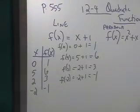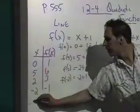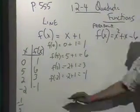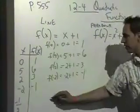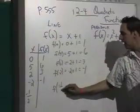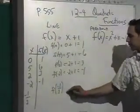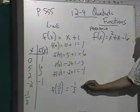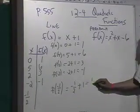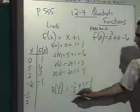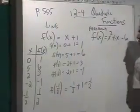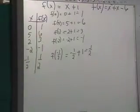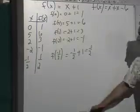What happens if we take negative one-half? f of negative one-half is equal to negative one-half plus one, which is equal to one-half. I think we've definitely got enough points there to be able to graph that. Remember doing that?